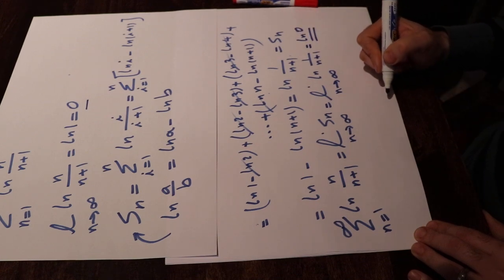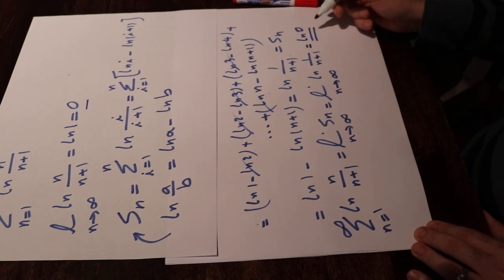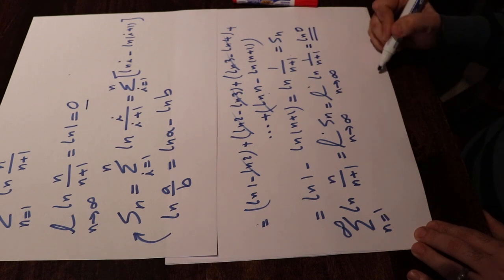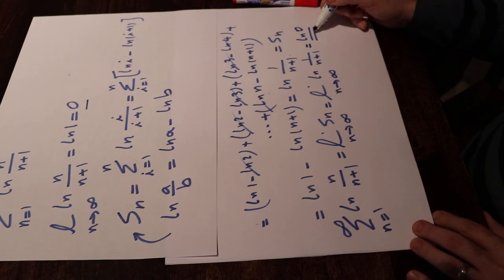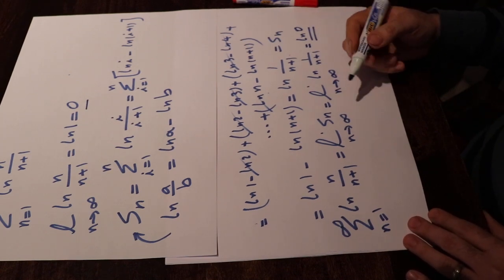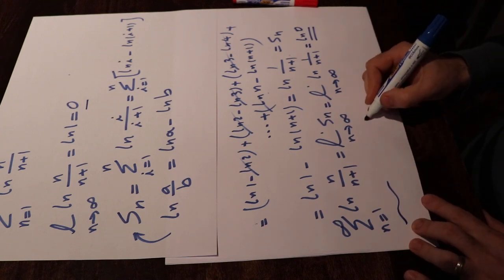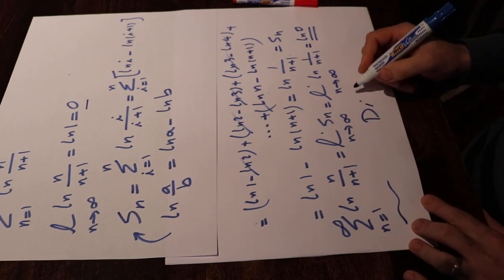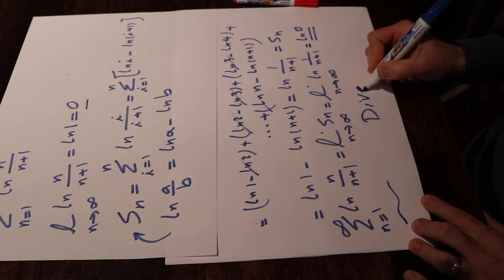But we know that doesn't exist. That means this limit doesn't exist. And therefore, you can conclude that this series is divergent because this limit does not exist. Divergent.